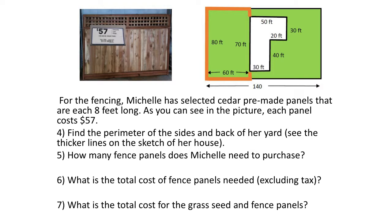We still have the diagram of the house — we still need it. Now we're focusing on the fencing for these last parts. For the fencing, Michelle has selected cedar pre-made panels that are each 8 feet long, and each panel costs $57. Find the perimeter of the sides and back of her yard — see the thicker lines on the sketch. That's the orange right here.